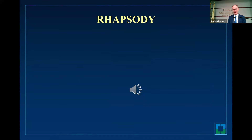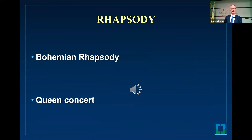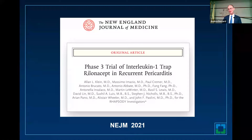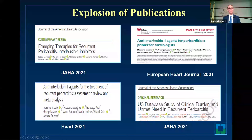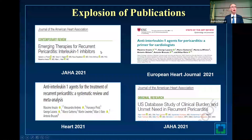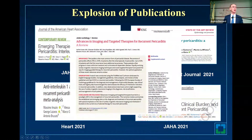What is Rhapsody? Is that Bohemian Rhapsody? Is this a Queen concert? No — this is Rhapsody from the New England Journal of Medicine. This is our phase three trial of IL-1 trap, rilonacept, for recurrent pericarditis. We were very fortunate to publish the Rhapsody trial. In this field, there has been basically an explosion of publications. Cardiology will have to know about anakinra and rilonacept. If you're ready to write a review in this area, it would definitely get accepted in a good journal.